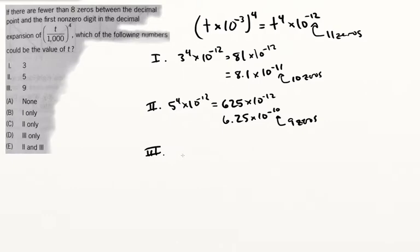The third one is going to give us 9 to the fourth times 10 to the minus 12. Now, 9 to the fourth is 81 squared. I don't really care what that is, but it's somewhere in the neighborhood of 6,500. It's not really worth calculating.